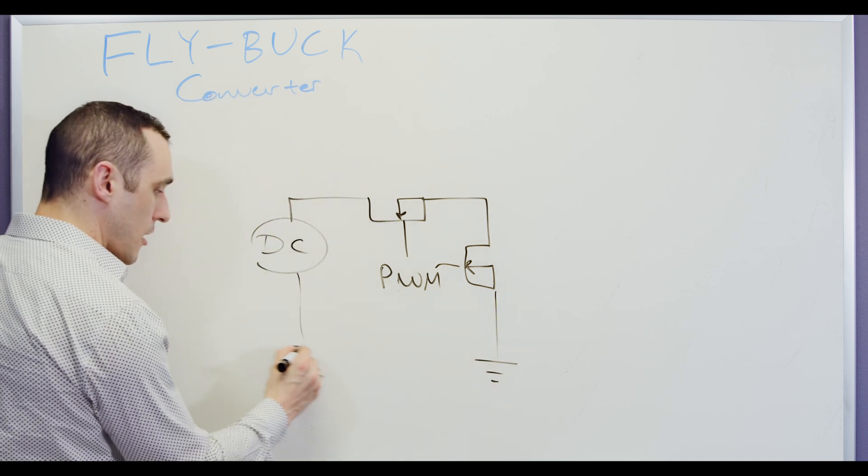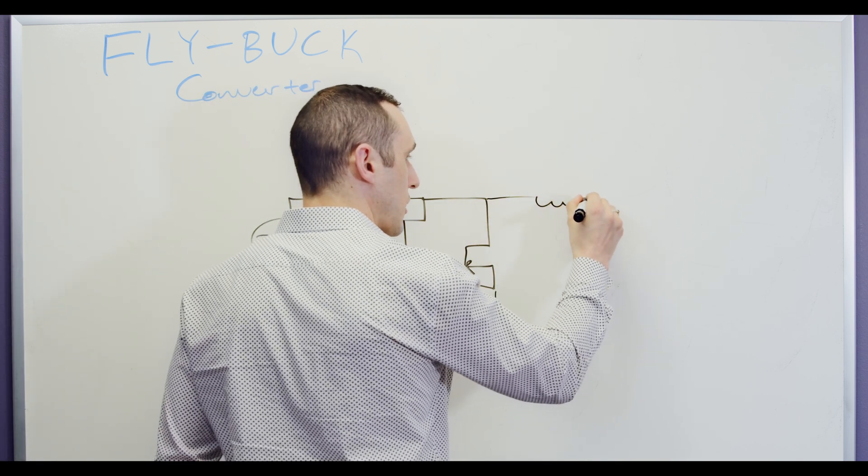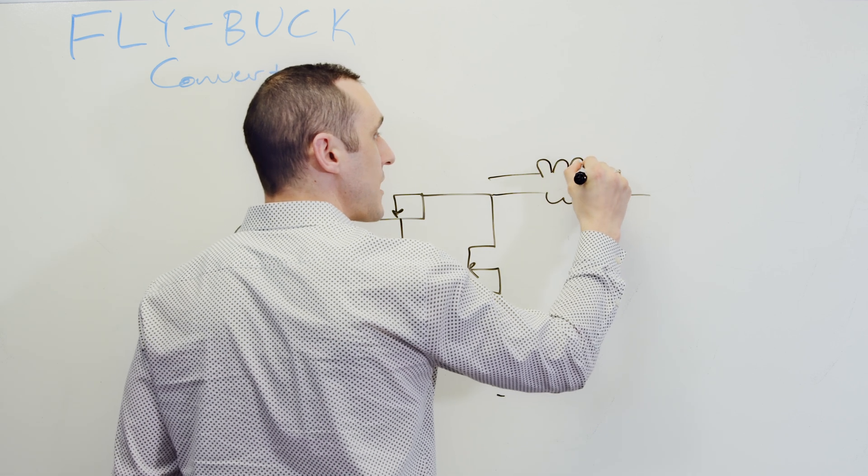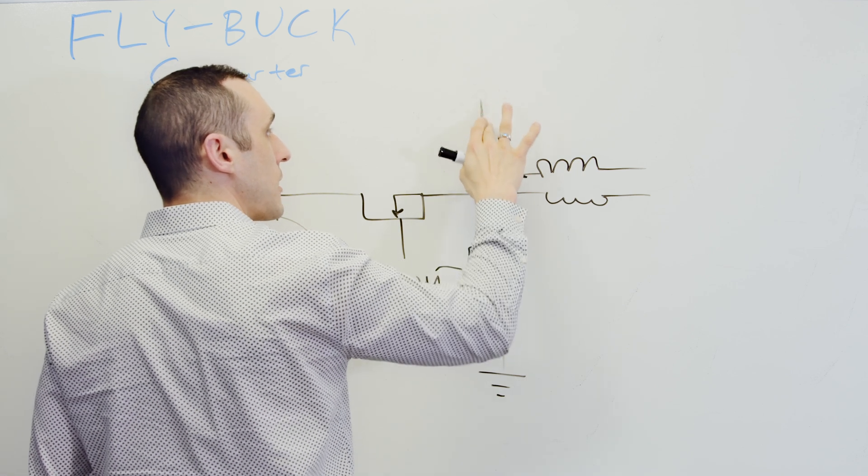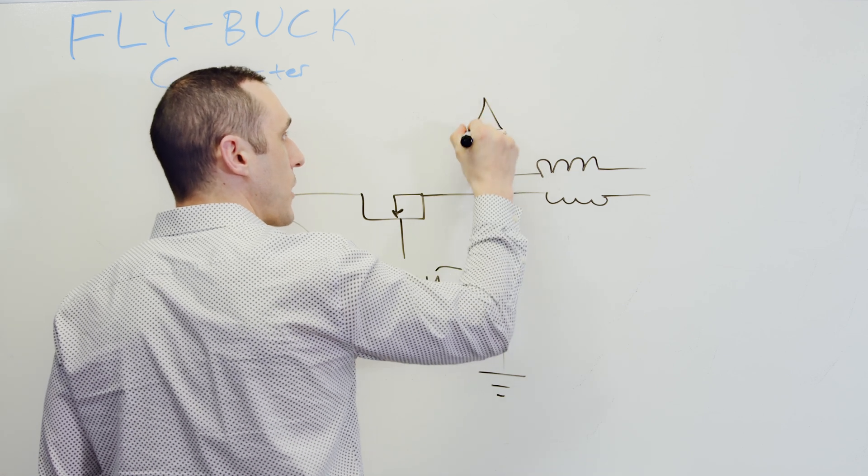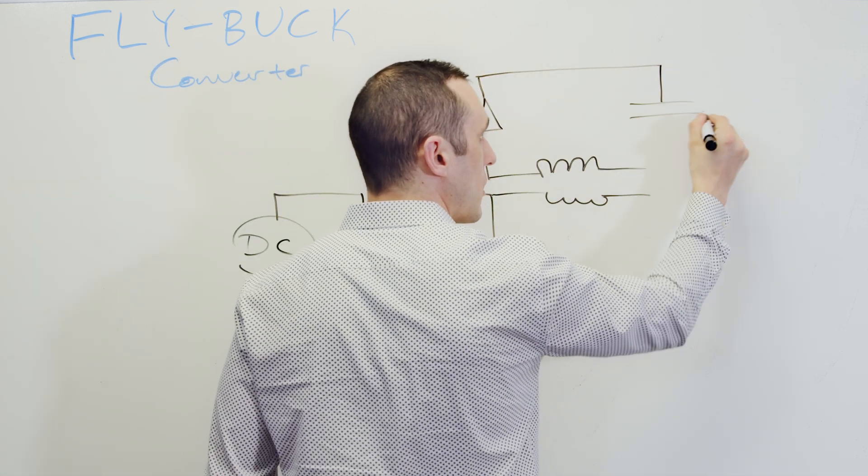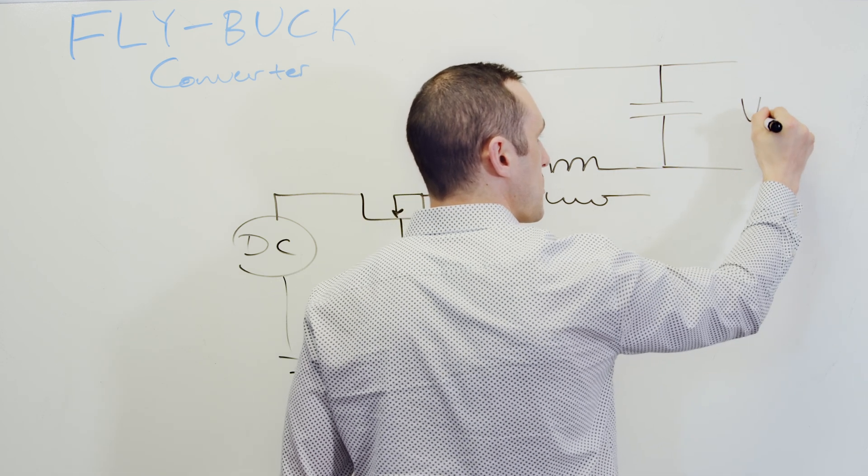Now here on the primary side, we have our first coil in our transformer, and this can induce power to the secondary coil in our transformer. Our other transformer over here can then have a diode for rectification, and then we go out over here to a capacitor, and then we have our output on this rail.